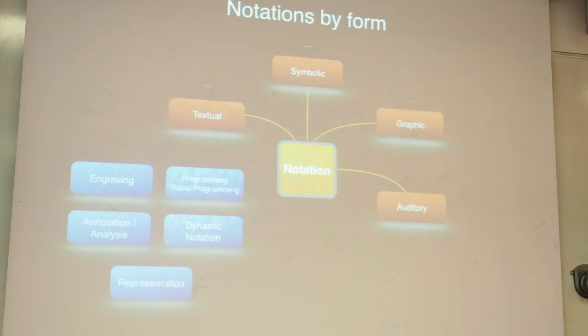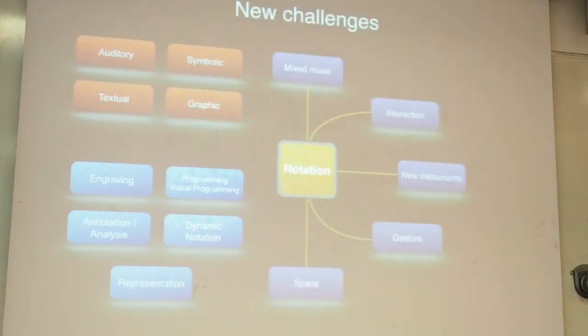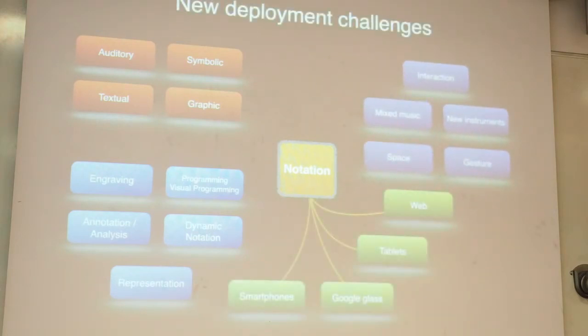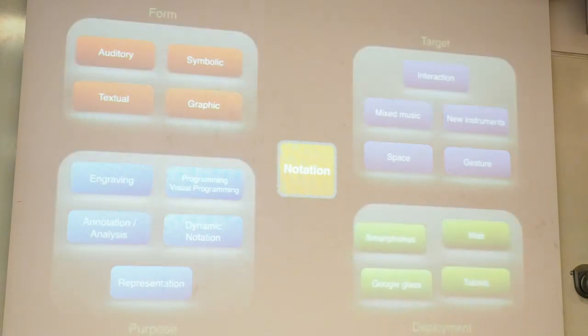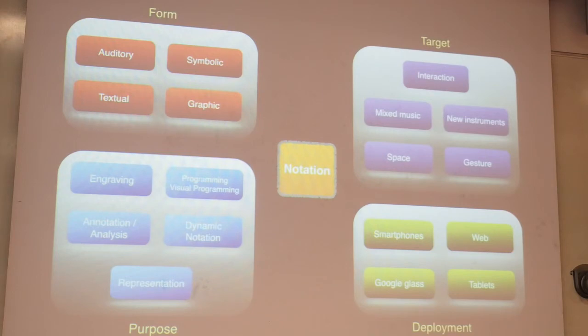We also have to consider new challenges like for mixed music. This one has been posted for years, but also for interaction, how to write for new instruments, how to write gestures, how to write for space. Also, new deployment challenges: how to deploy music scores over the web, tablets, or why not Google Glass, smartphones, etc. So putting everything in categories is not trivial. These proposed categories are just some views of music notation and there are, with no doubt, many other interesting views.